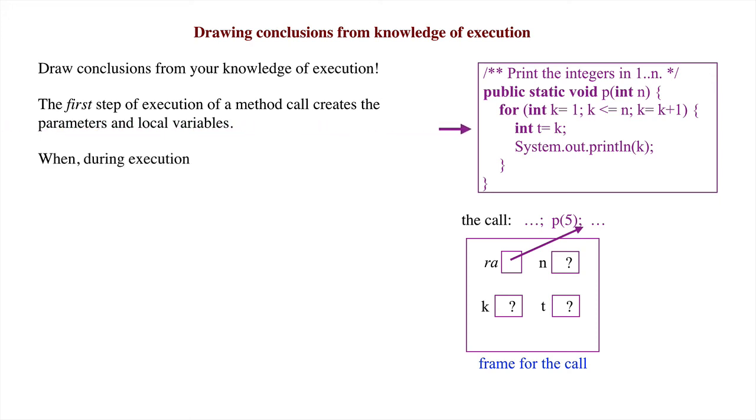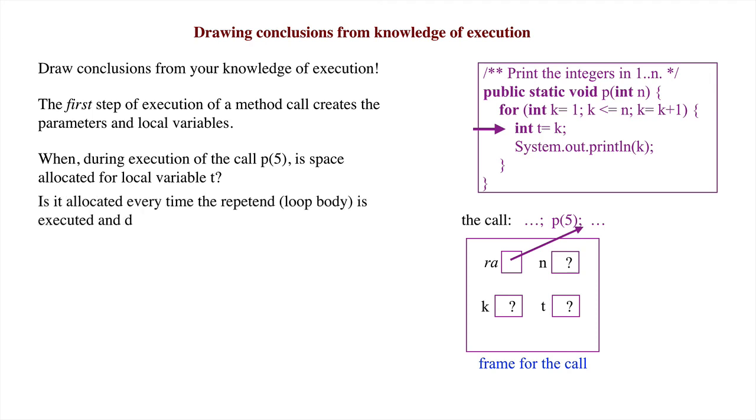When, during a call of procedure P, is space allocated for local variable T? Is it allocated every time the repetend, meaning the loop body, is executed and deallocated when the repetend is finished?